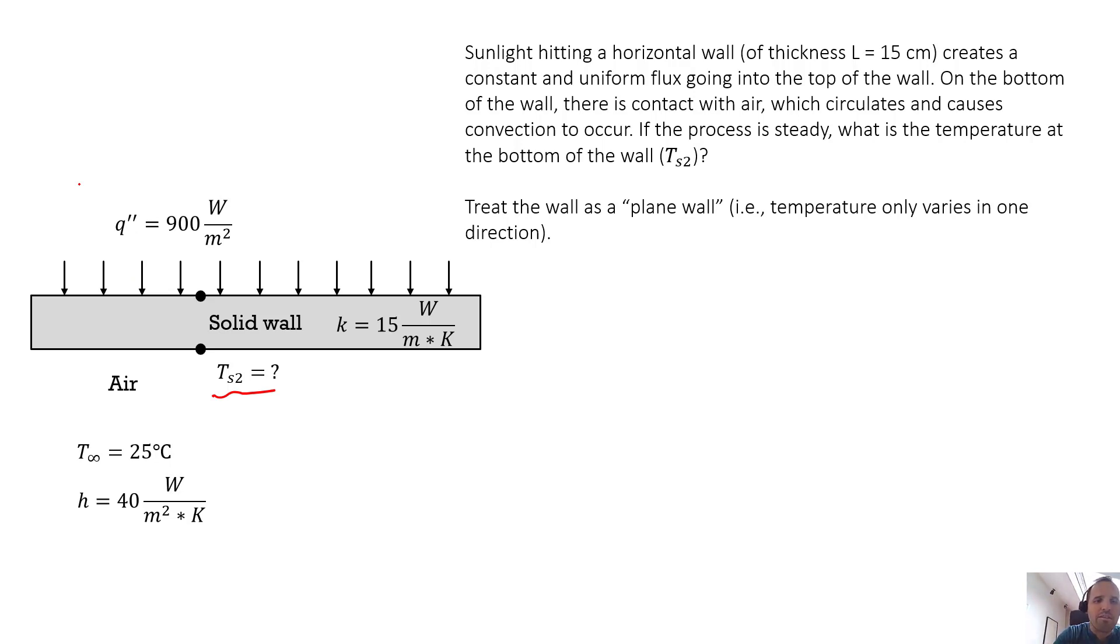We're going to have heat transfer by conduction going through this wall. And then from this surface out into the air, we're going to have heat transfer by convection. So this uniform flux is actually radiation absorbed from the sun. Then we have conduction through the wall to carry that heat from the top to the bottom all the way through its thickness. And then we have convection going from that surface out into the ambient air.